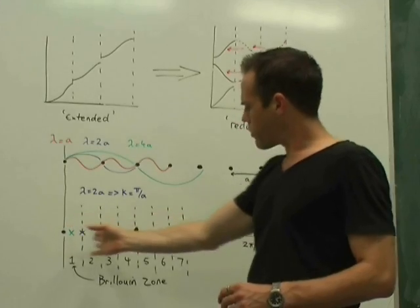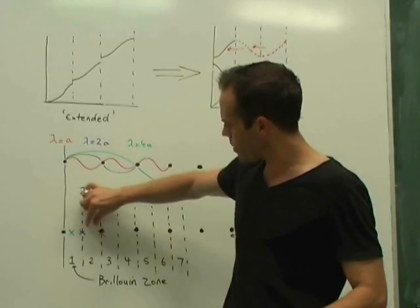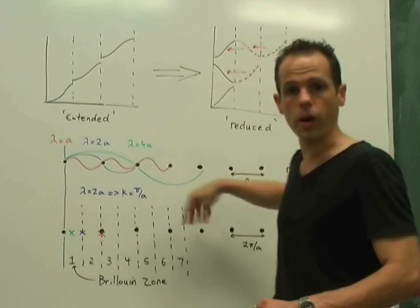And so if we come through these Brillouin zones, everything should look the same in each of them, just mirrored one about the other.